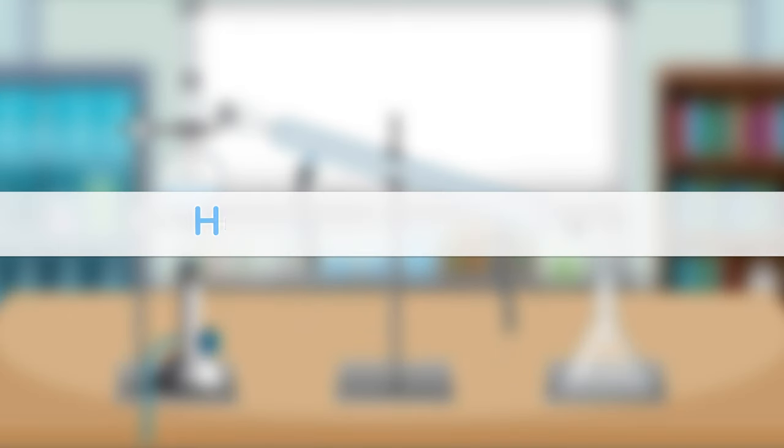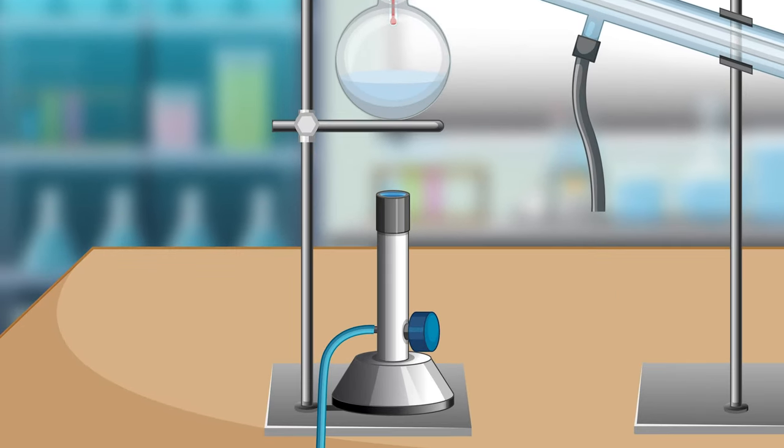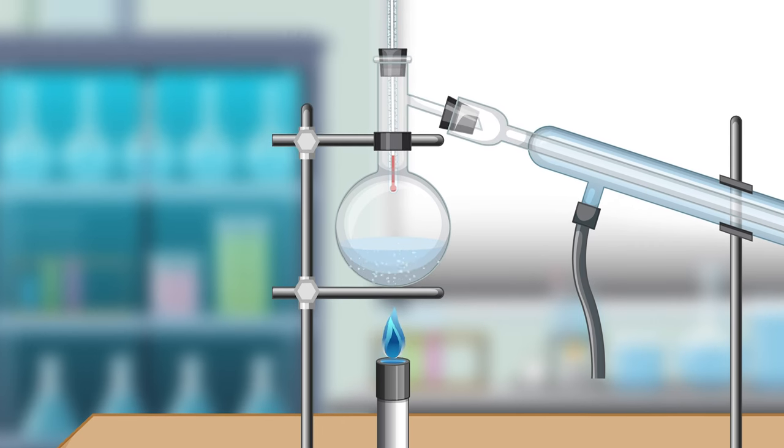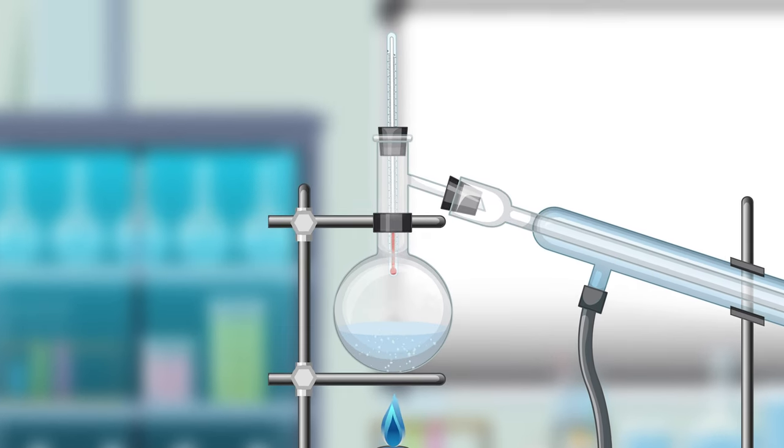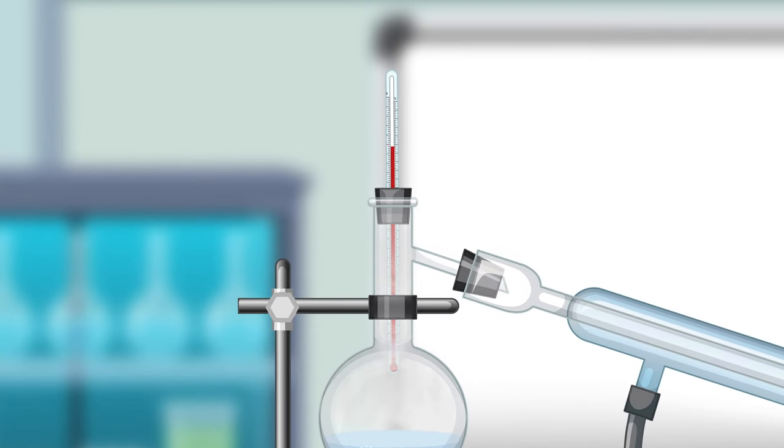Step 3. Heat the substance. The burner is used to heat the substance we wish to distill in the distillation flask. As the temperature rises, keep an eye on the thermometer to monitor the boiling point of the substance.